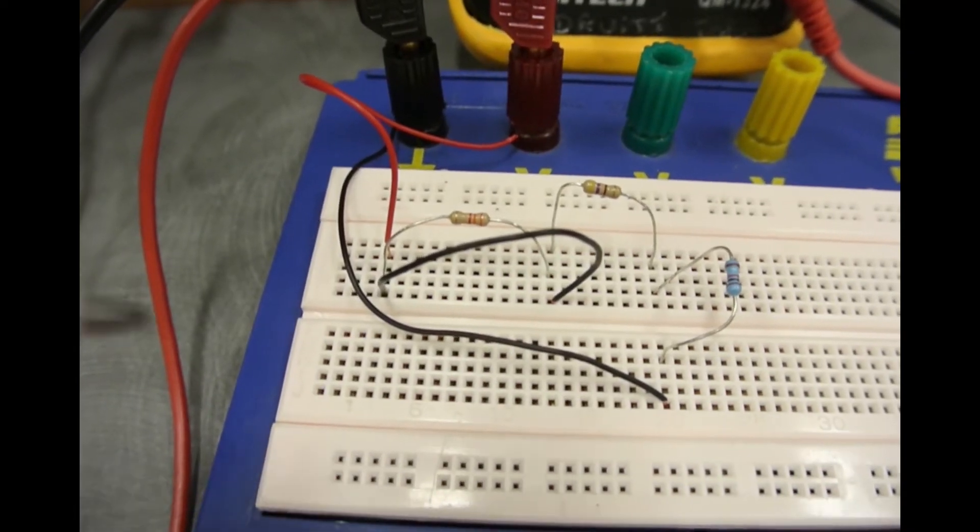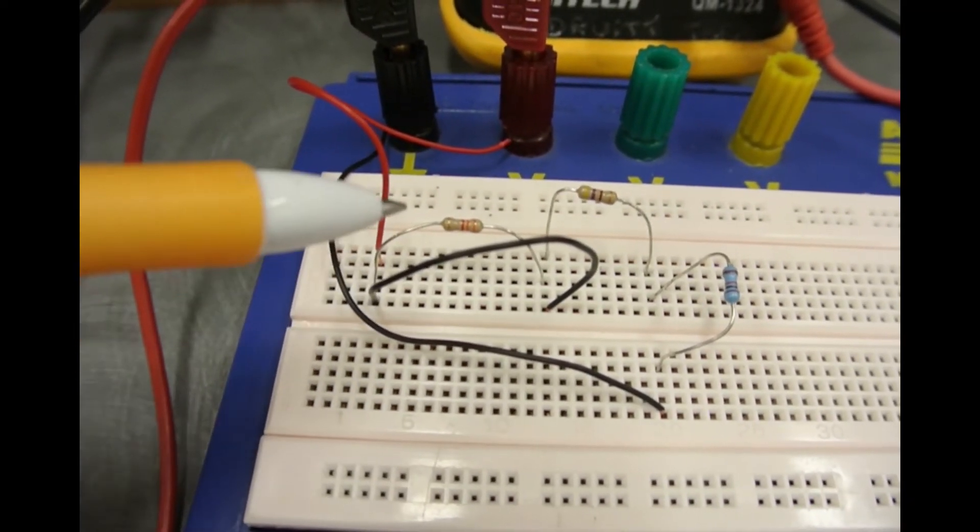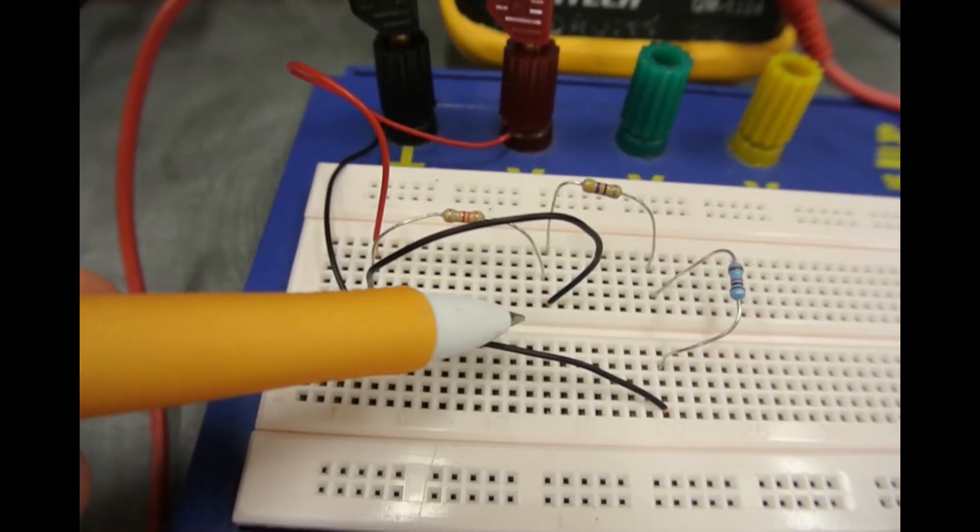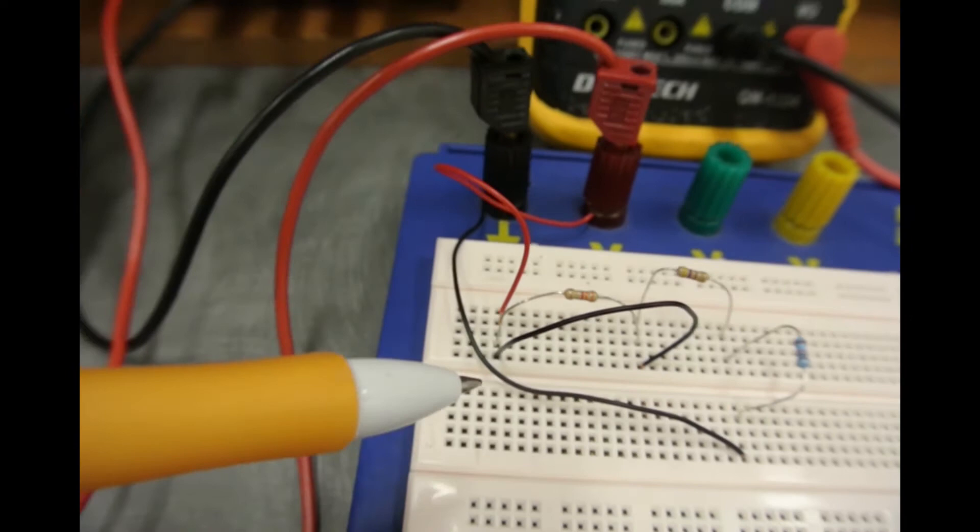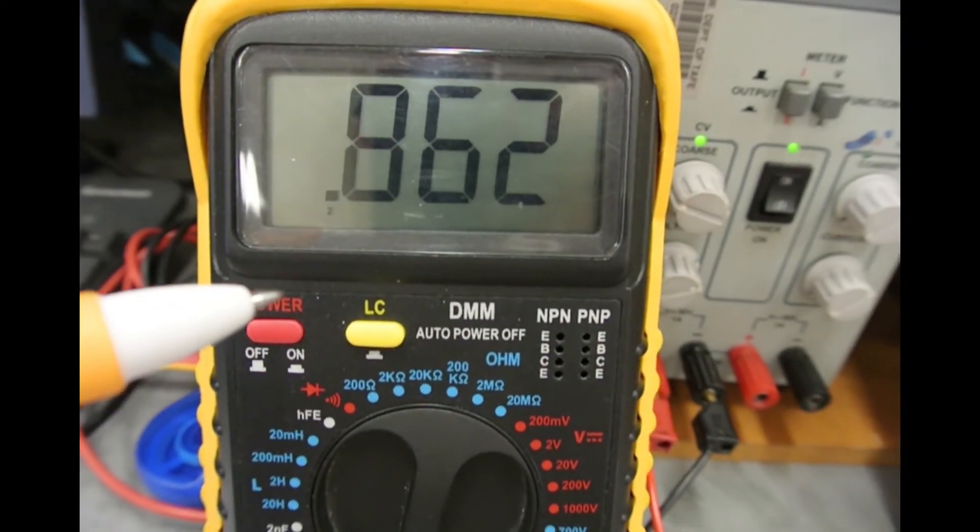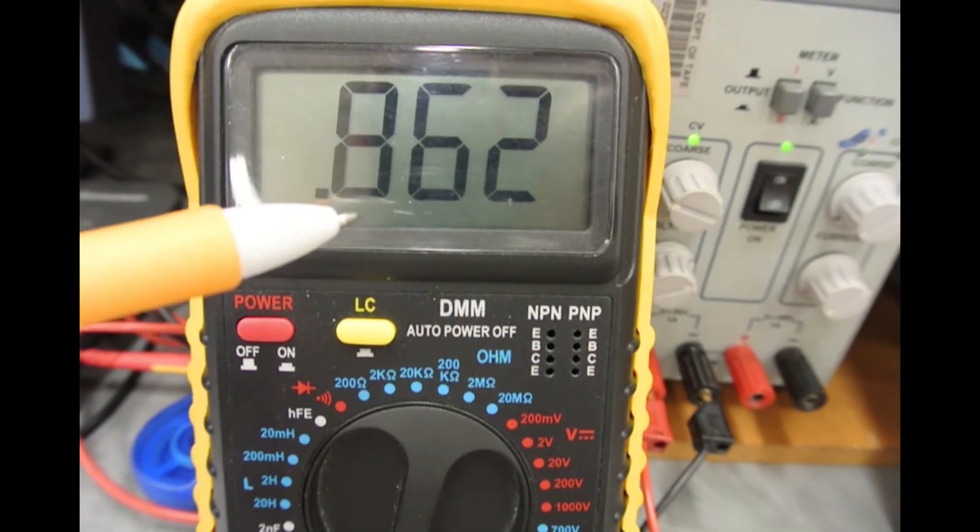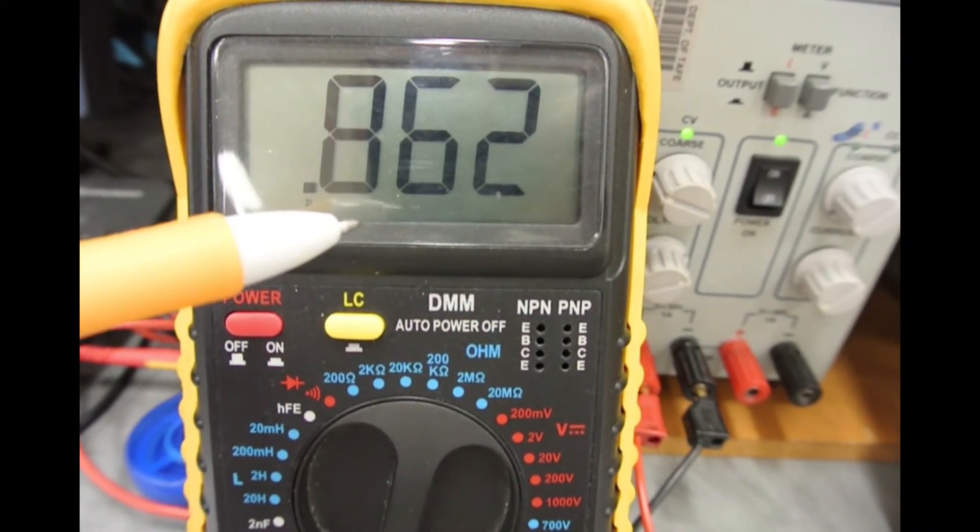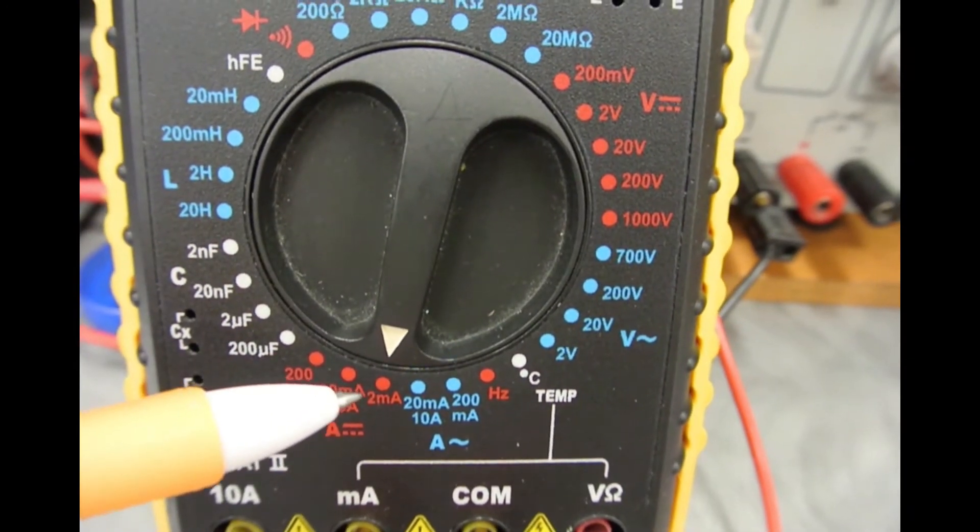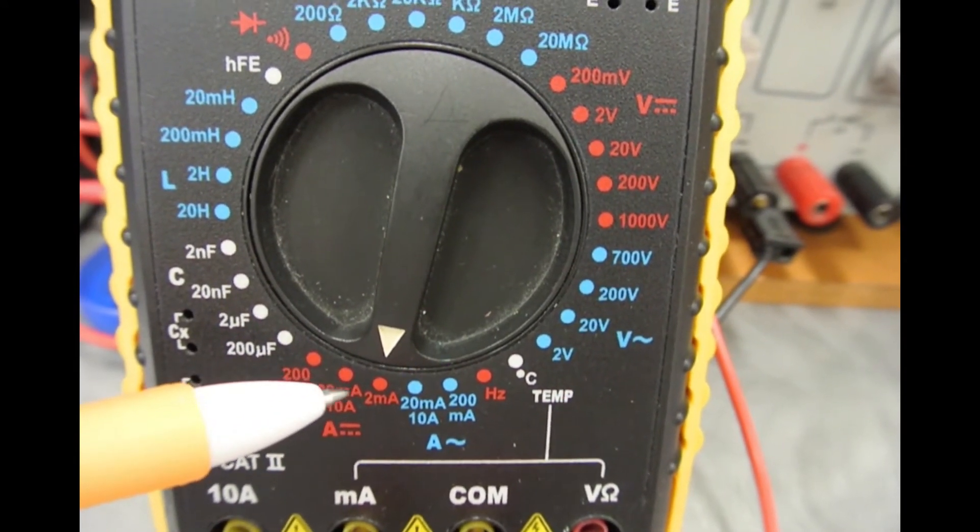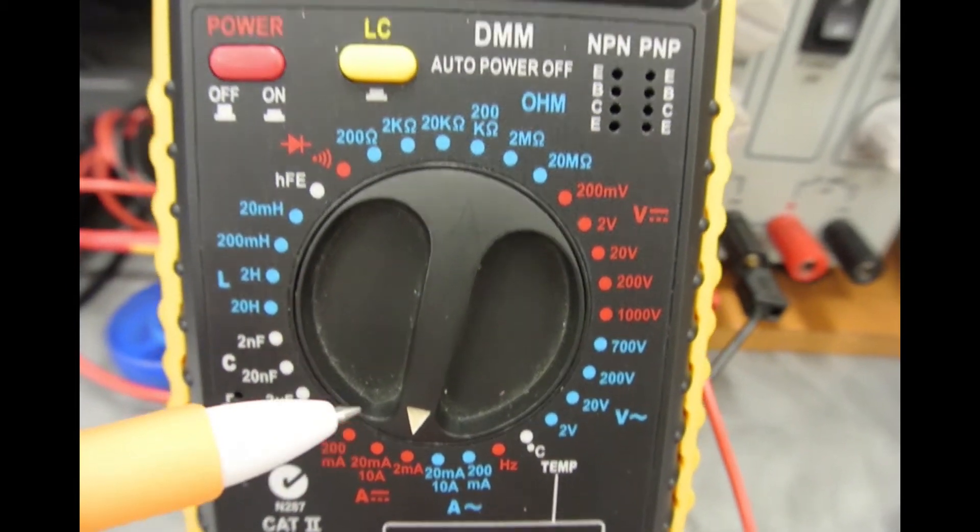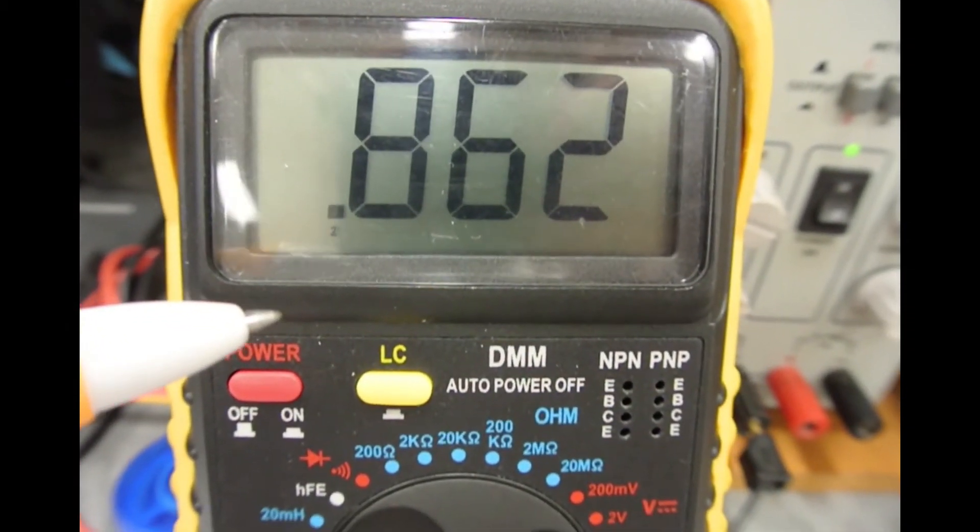Now I've placed the shorting link across my 3.3k resistor. That's this black wire here, shorting it out. We're supposed to measure the new current in the circuit, which has now jumped up to 862 microamps. Again, we're using the 2 milliamp scale on the meter, which was recommended in the lab. So we'll write that value down in the sheet.